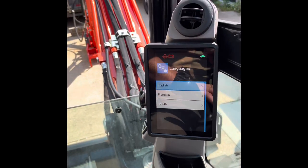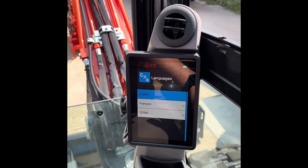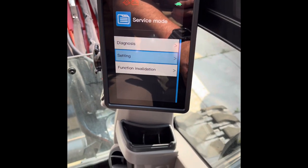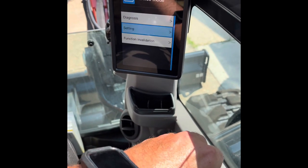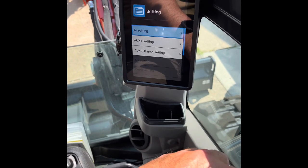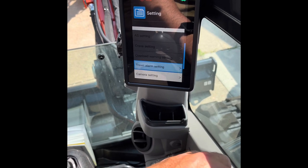This is the screen that comes up. You hit English, and then you toggle down until you get to Settings. Setting, turn it down, Camera Setting.